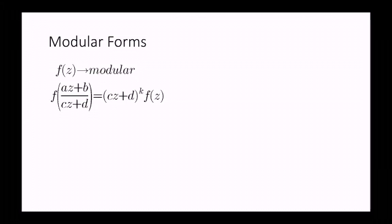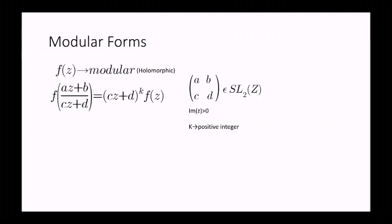Here f is a holomorphic function. It means that every point in the neighborhood of a point in the field is analytic, and here the matrix of a, b, c, d belongs to the set of two by two matrices with integer elements and determinant one. Also z lies on the upper half of the argon plane, which means that the imaginary part of z is greater than zero, and here k is essentially a positive integer.